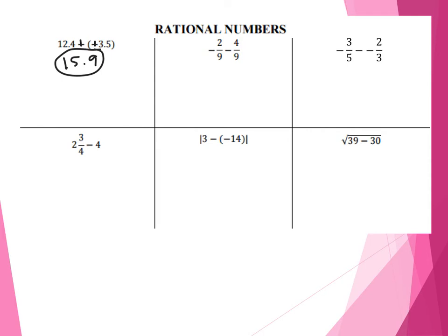Next one, I have negative 2 over 9 minus 4 over 9. Any time we add or subtract fractions, we look for a common denominator — which we have here. So I'm going to keep the denominator of 9 and take my numerators: negative 2 minus 4. Notice how I'm applying the negatives to the numerators, which you always want to do. Here I'm subtracting from a negative — one thing you might want to do is turn that subtraction into addition. So negative 2 plus negative 4 gives me negative 6 over 9.